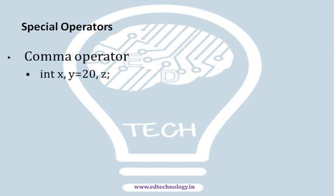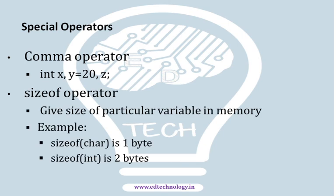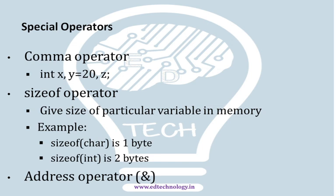The final category is the special operators. We have the comma operator used when declaring variables in a statement, like integer x comma y, to separate variables with different names. Then we have the sizeof operator, which is used to find the size of a particular data type — this is also covered in the pointers lecture series. There is also the address-of operator, the ampersand symbol used in scanf, which is used to find or give the address of a particular variable. More on address operators will be discussed in the pointers unit.